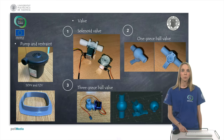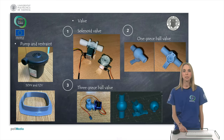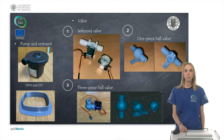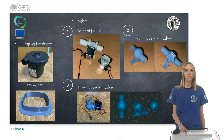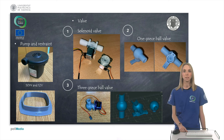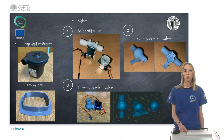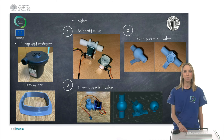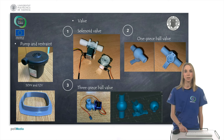Solenoid valves were initially purchased, but the pump didn't have enough capacity to operate them, so it was decided to design them instead. A ball valve was designed with a simple mechanism using a servo motor to move the internal ball, allowing or blocking the passage of air. However, the design had to be modified to create the valve in three parts, as printing it as a single piece didn't allow the ball to move.